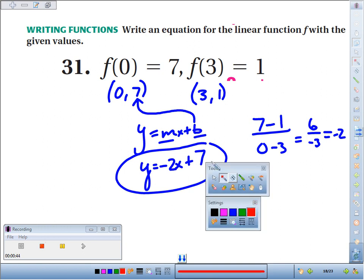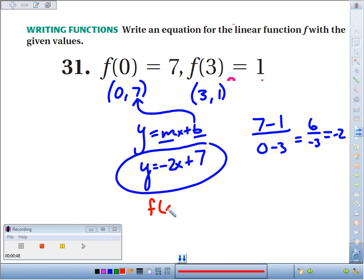If we write it in function notation, which is just fancy notation, instead of y, we just write f of x equals negative 2x plus 7. All we do is exchange y with f of x.